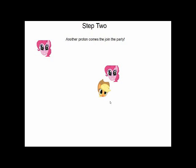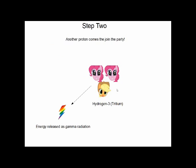Step 2. Another proton comes and binds with deuterium, forming hydrogen-3, or tritium. This releases gamma radiation.